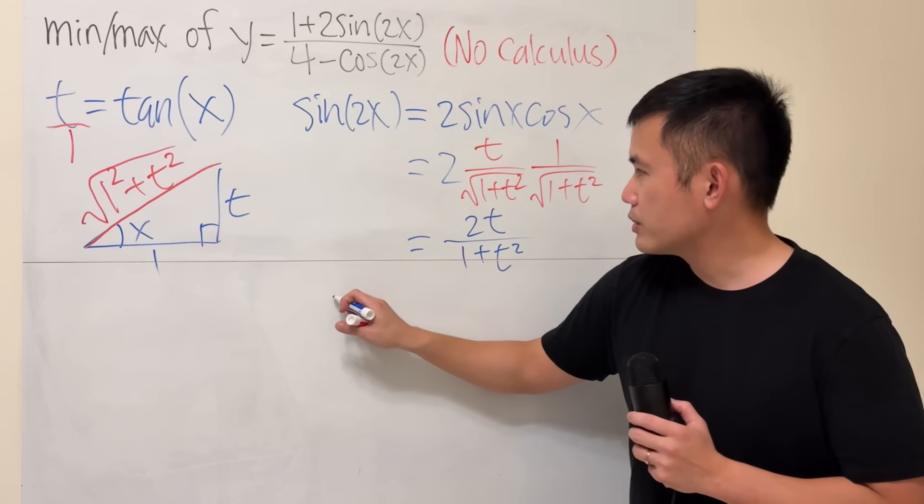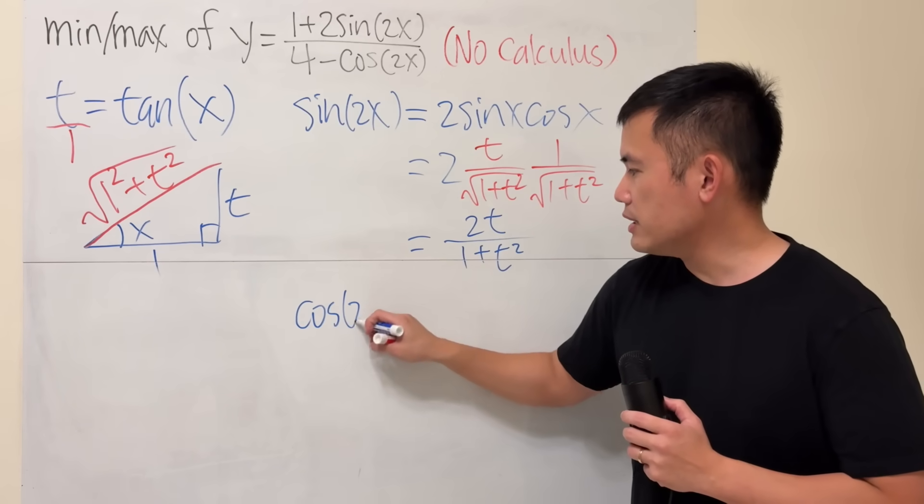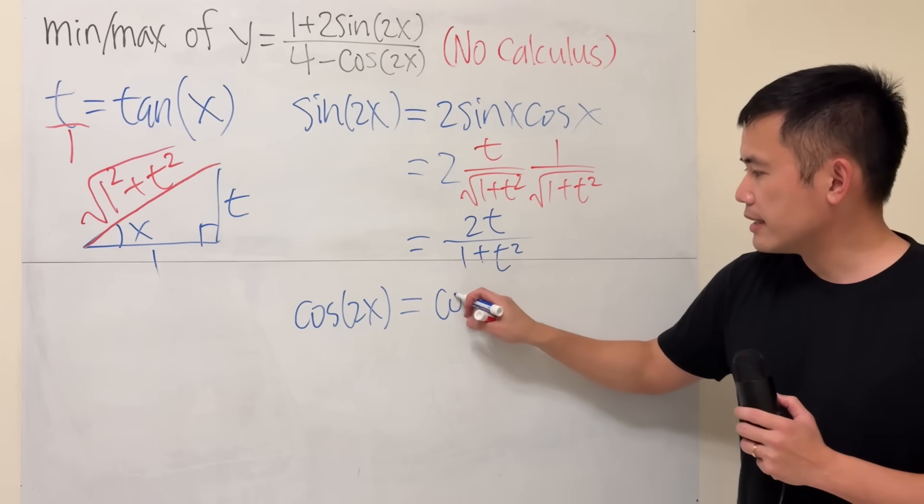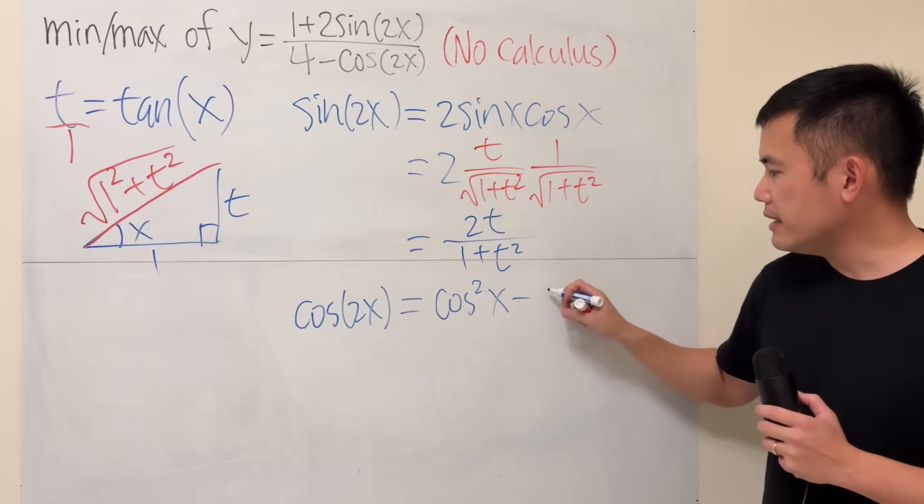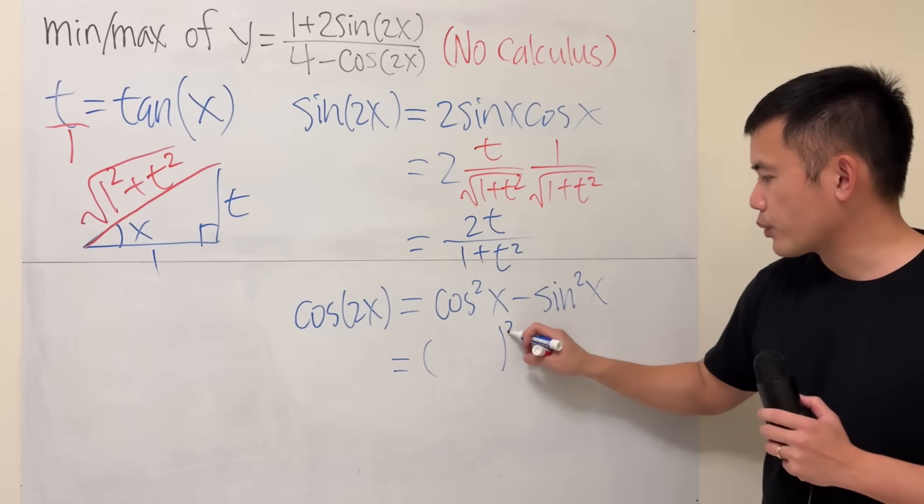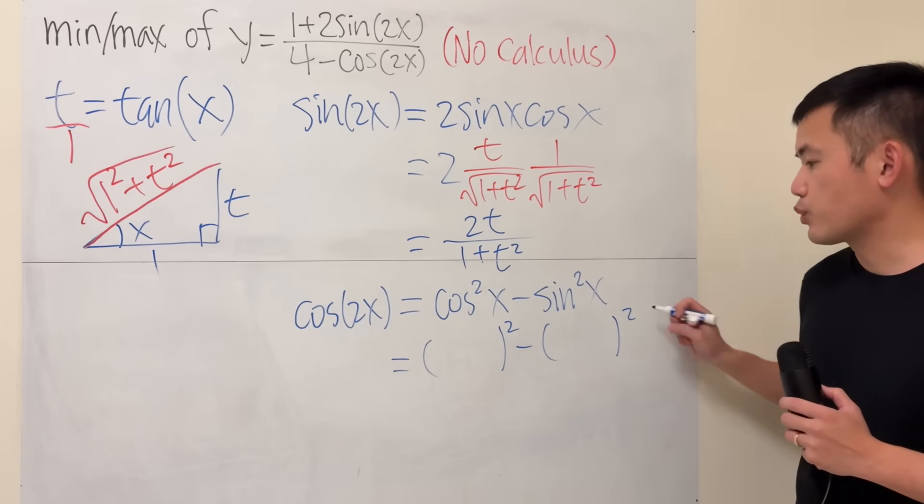And then, let's go ahead and do the same thing for cosine of 2x. Use the double angle identity. I will write that as cosine squared x minus sine squared x.